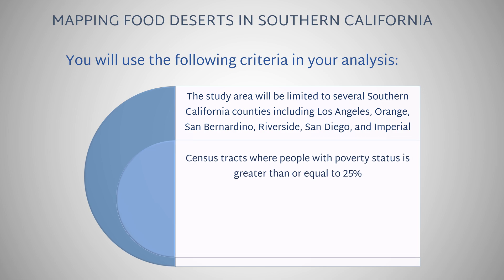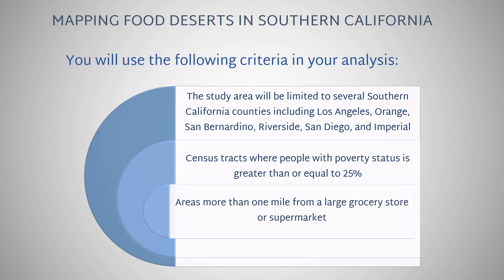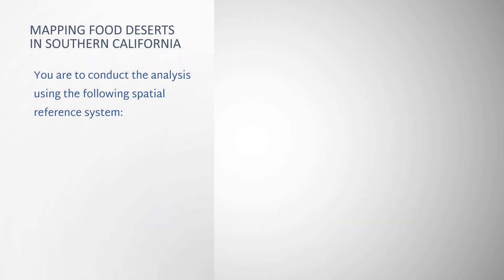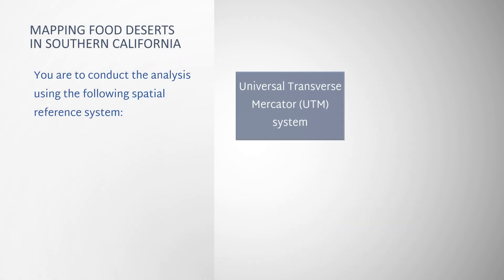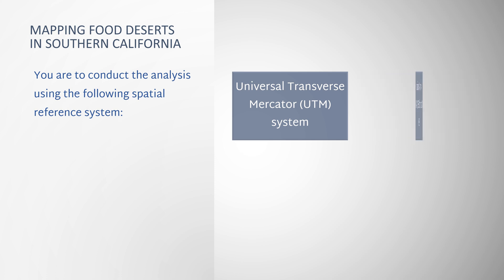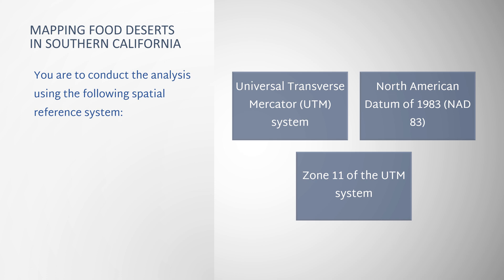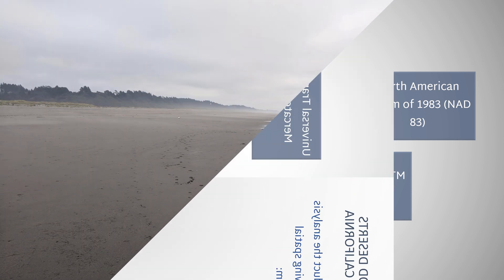Census tracts where people with poverty status is greater than or equal to 25%. Areas more than one mile from a large grocery store or supermarket. You are to conduct the analysis using the Universal Transverse Mercator system along with the North American Datum of 1983. Southern California lies in zone 11 of the UTM system.